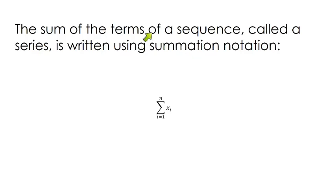The sum of the terms of a sequence, which we call a series, is written using summation notation. So this is basically a condensed way of writing, like if I wanted to write one plus two plus three plus four plus five plus six plus seven plus eight, there's a way to condense it using this sigma notation.